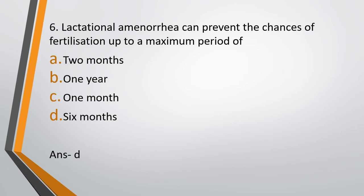What is Lactational amenorrhea? It is one of those natural contraceptions. The word itself reveals its principle — lactational means milk feeding by the mother, and amenorrhea means there is no menstrual cycle. So immediately after parturition, after giving birth to a child, while the mother is feeding the child with her breast milk, she doesn't have a menstrual cycle. So if any coitus is carried out during that period, there will be no chances of fertilization. Lactational amenorrhea is successful for 6 months.